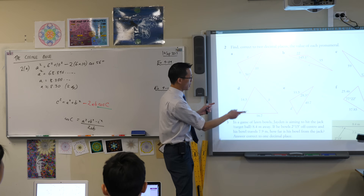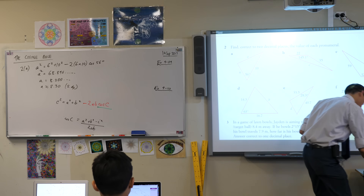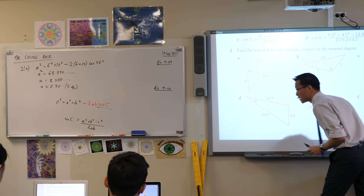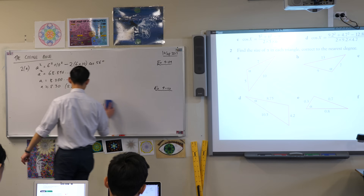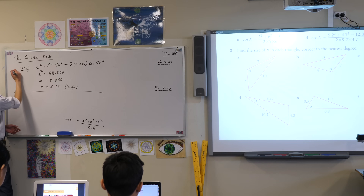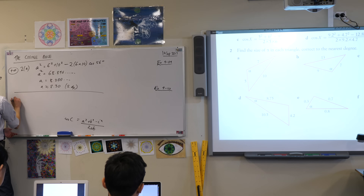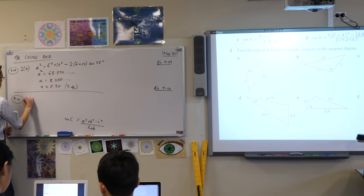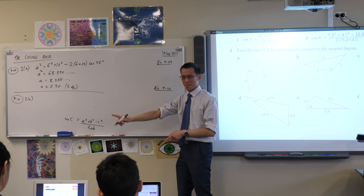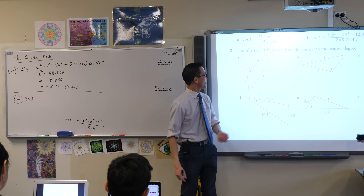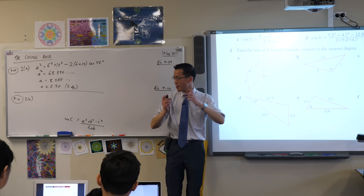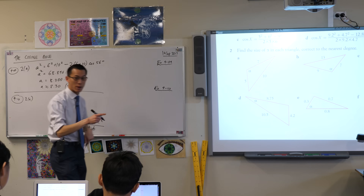Now, on your textbook, flip forward a few pages — about two pages. We're going to do 2A again but in the next exercise. Let's see if we can flex our trigonometric muscles and do this again without a diagram.